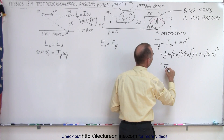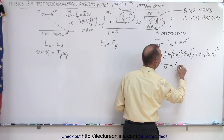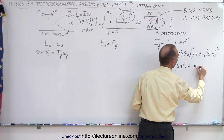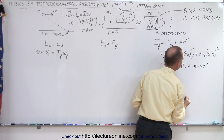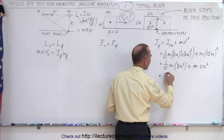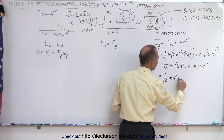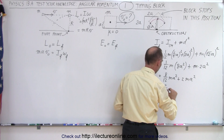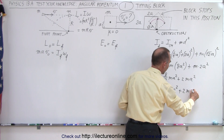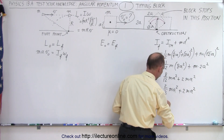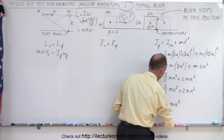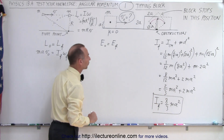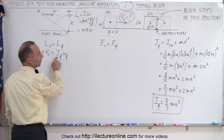This gives 1/12 · m · (4a² + 4a²) which is 1/12 · m · 8a², plus m · 2a². Combining: 8/12 · ma² plus 2ma² equals 2/3 · ma² plus 2ma², which is 6/3 + 2, giving 8/3 · ma². So the final moment of inertia of the block tipping about its corner is I_final = 8/3 · ma².